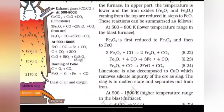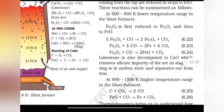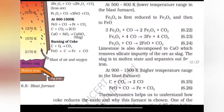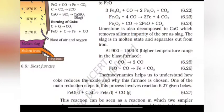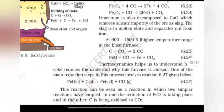At 500 to 800 Kelvin Fe2O3 is reduced to Fe3O4 and then to FeO. 3Fe2O3 plus CO gives 2Fe3O4 plus CO2. Fe3O4 plus 4CO gives 3FeO plus 4CO2. Fe2O3 plus CO gives 2FeO plus CO2. Limestone is also decomposed to CaO which removes silicate impurity of the ore as slag. The slag is in molten state and separates out from the iron.